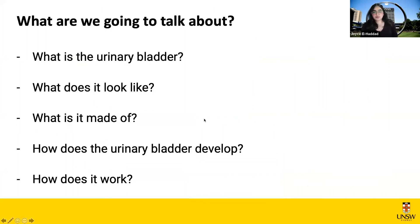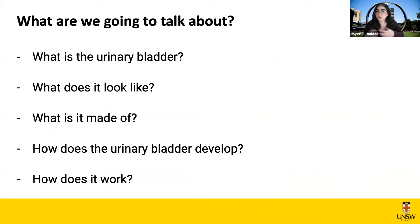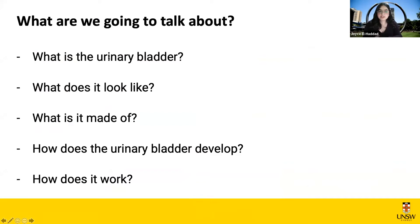So this is what we'll be talking about today. We'll start basic — first talking about what the urinary bladder is, because the most important thing in anatomy is to orientate ourselves: to know where we are in the body, to know what we're talking about, and to create a frame of reference. Then we'll talk about what the urinary bladder actually looks like — the gross anatomy, so with the naked eye.